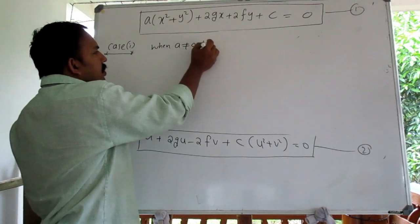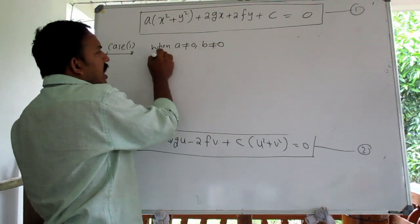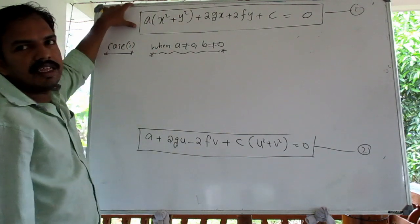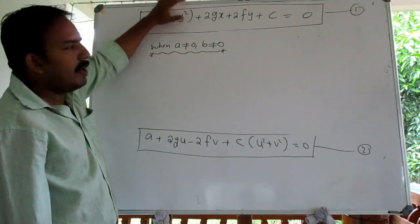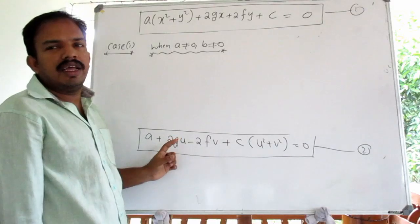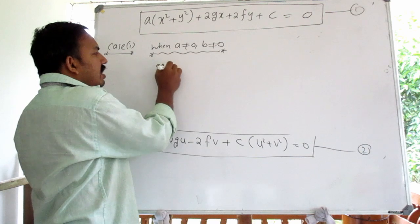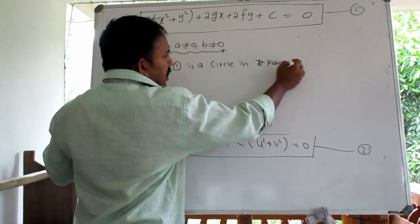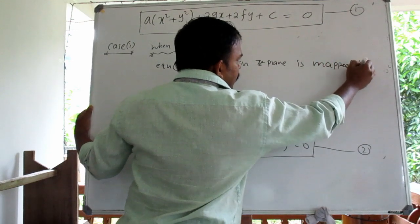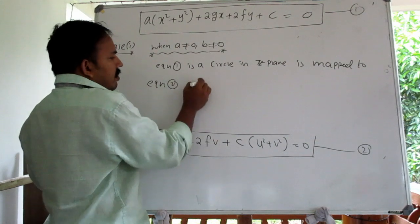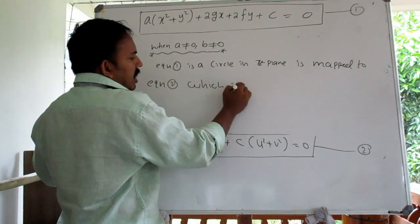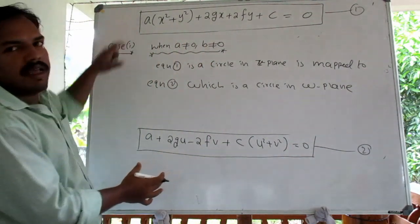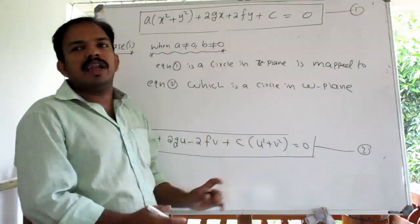Case 1: When the coefficient a is not zero, the original equation represents a circle in the z-plane. This circle in the z-plane is mapped to equation 2, which is also a circle in the w-plane. So a circle maps to a circle.